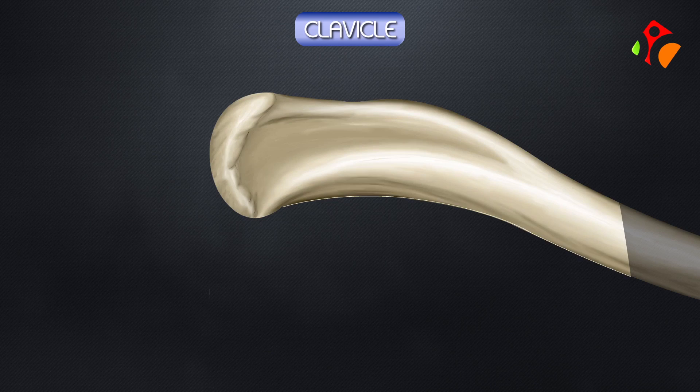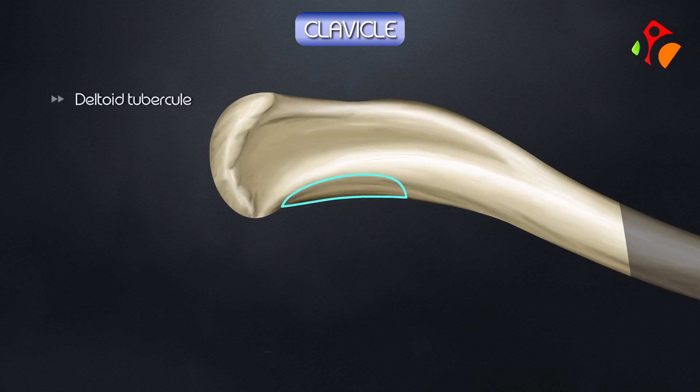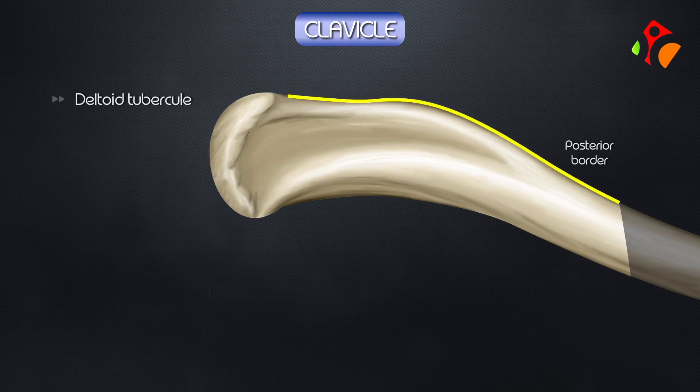The anterior border is concave and bears the deltoid tubercle. The posterior border is convex.